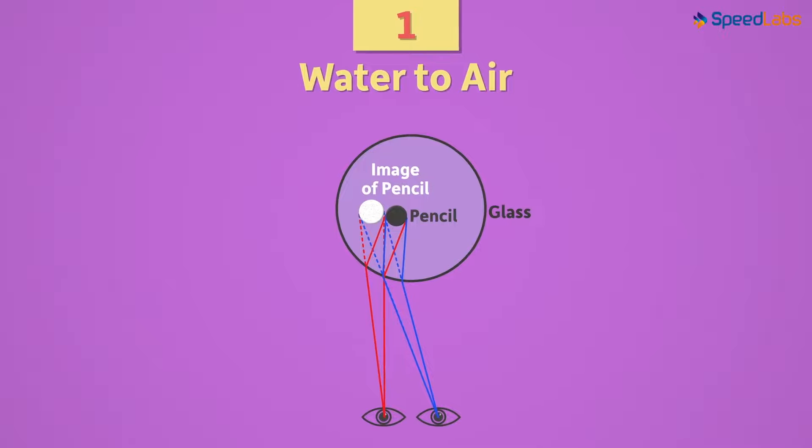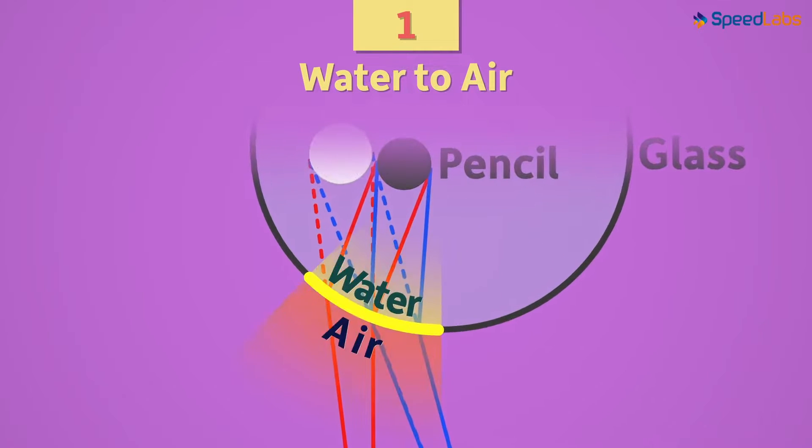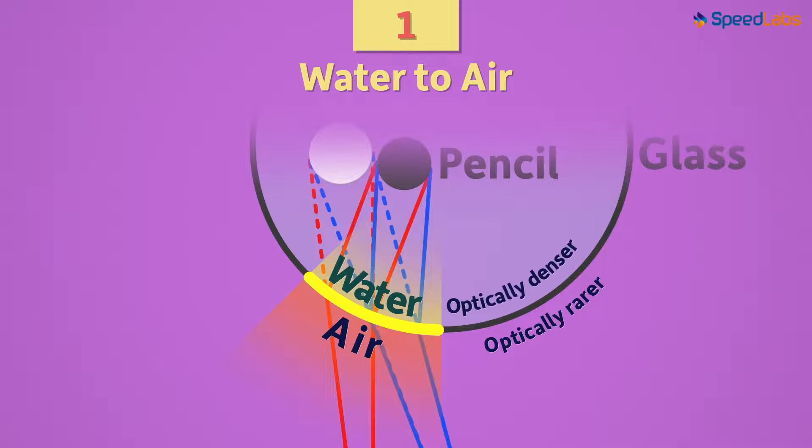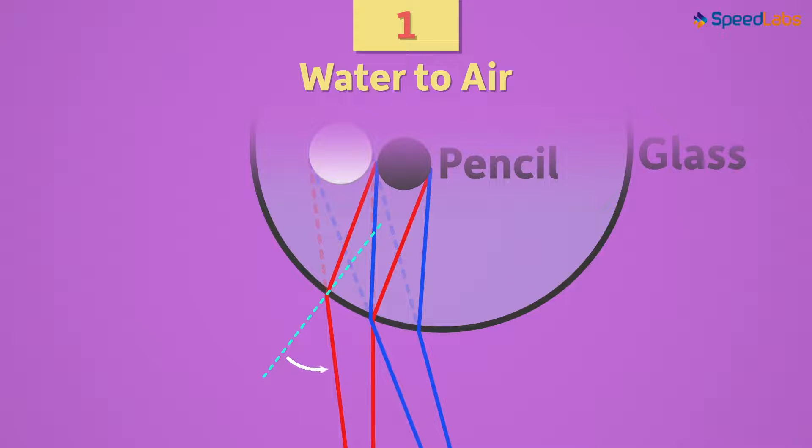Let's discuss the first case. We know that light is getting refracted at the boundary of water and air, and is then reaching our eyes. And air is optically rarer than water. Hence, light bends away from the normal.